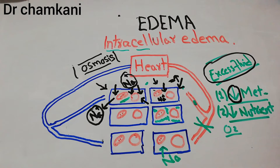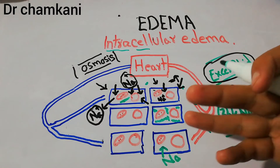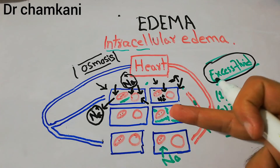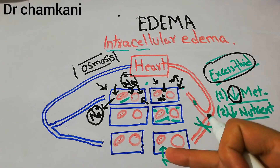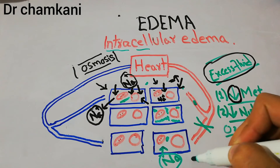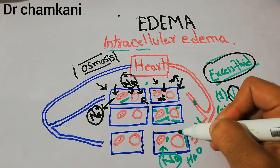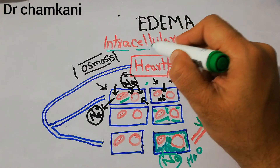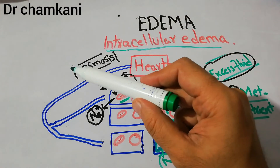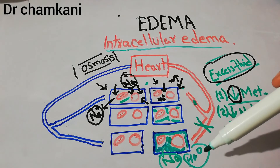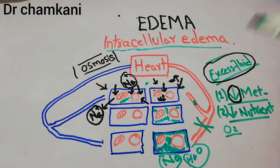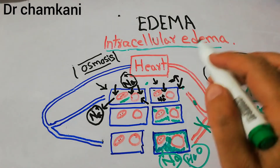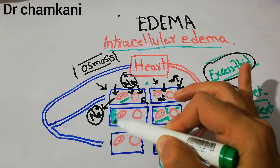For example, if there is hypoxia due to any reason and the cells cannot be properly supplied with nutrients and oxygen, this leads to decreased metabolic activities. Sodium keeps entering the cells, water follows the sodium by osmosis, and it keeps accumulating inside the cells, causing them to swell — and this again leads to intracellular edema. These are the two main causes.